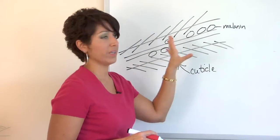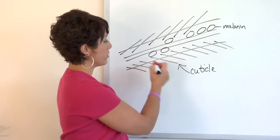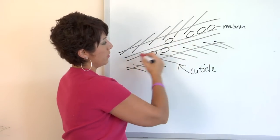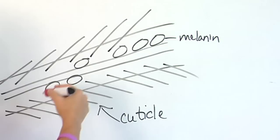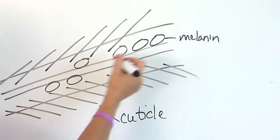This is a very basic drawing of a hair shaft. So here's the cuticle. This is the medulla, and this is the cortex. Not everyone has a medulla, but that's neither here nor there.